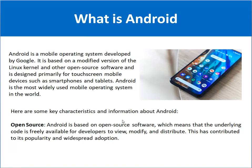Now, the key characteristics of the Android operating system. The first one is open source. The Android operating system is open source software, which means that the source code is freely available for programmers and developers. They can modify the code, they can view it, and they can also distribute it. Due to this reason, its popularity and adoption all over the world is widely increasing.